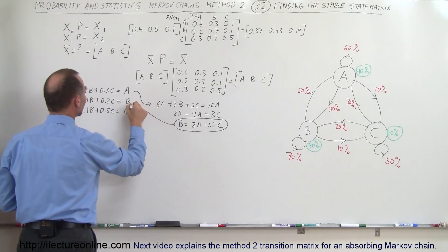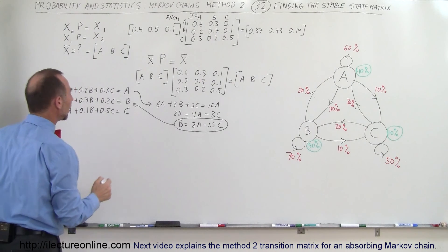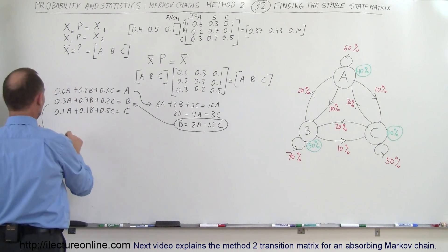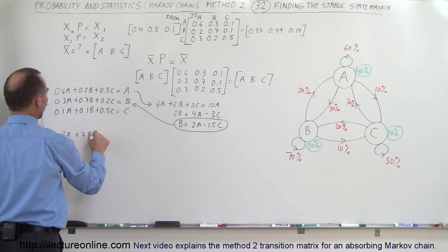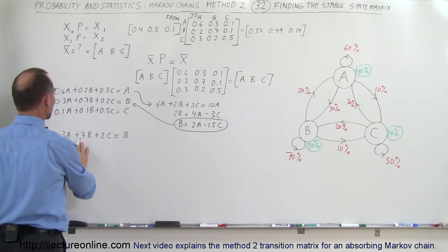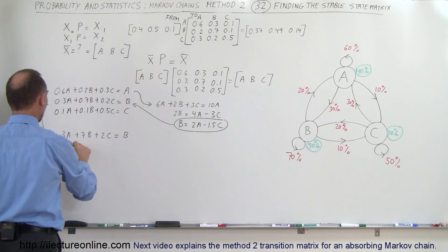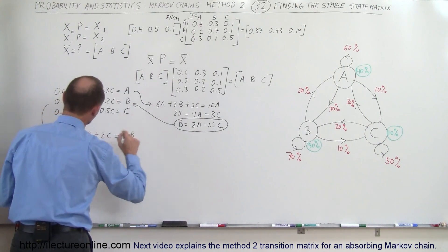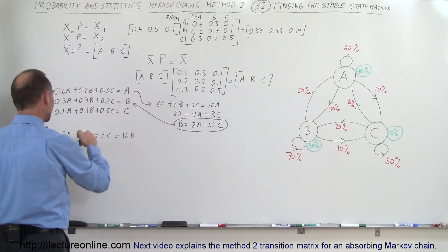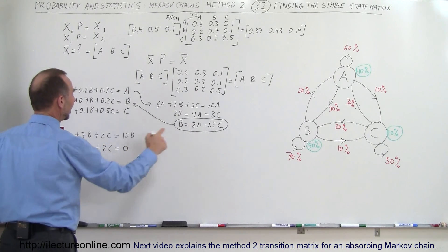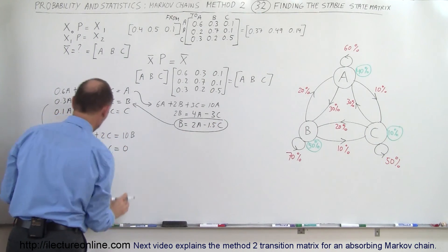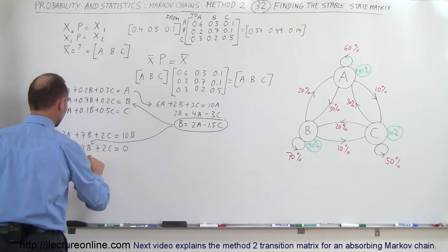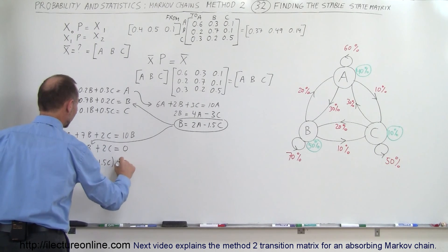Now we take that expression for B and plug it into our second equation. Taking the second equation and multiplying everything by 10 gives 3A + 7B + 2C = 10B. Moving the 10B over gives 3A − 3B + 2C = 0. Plugging in B = 2A − 1.5C: 3A − 3(2A − 1.5C) + 2C = 0.